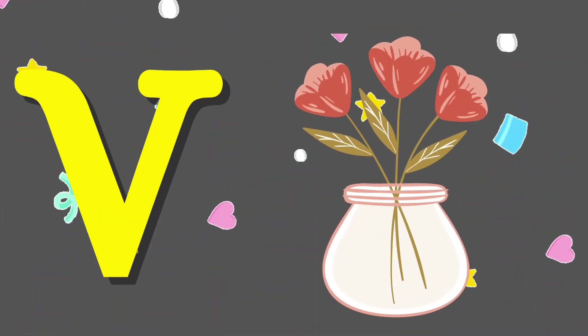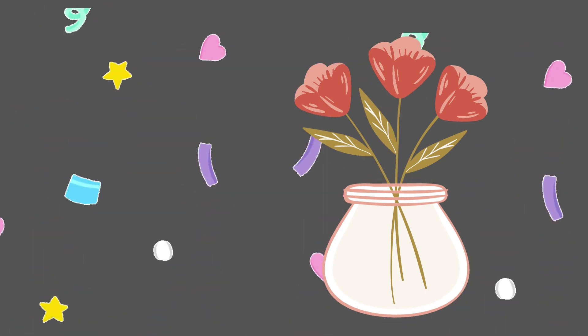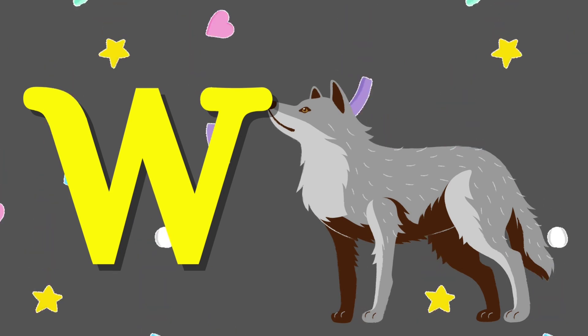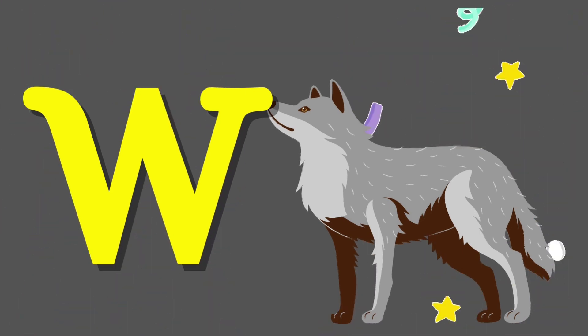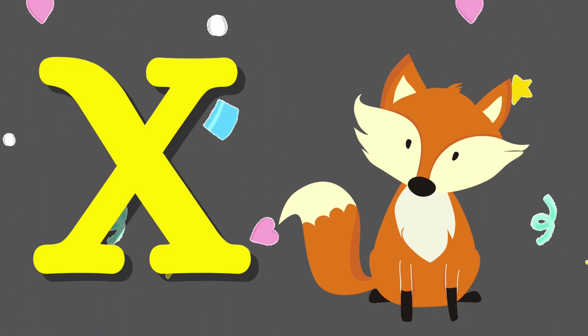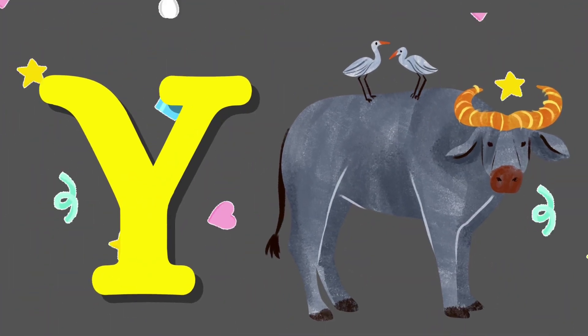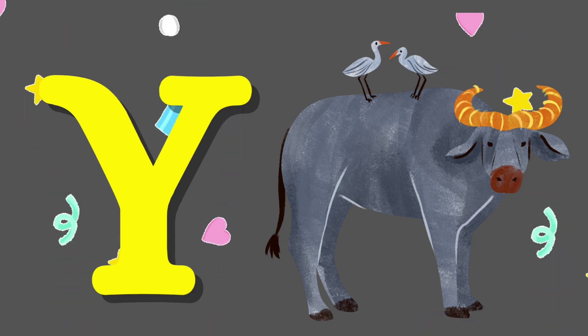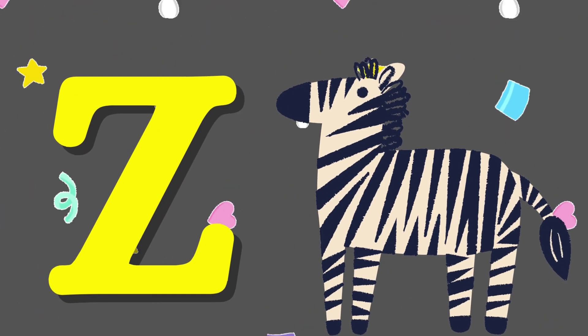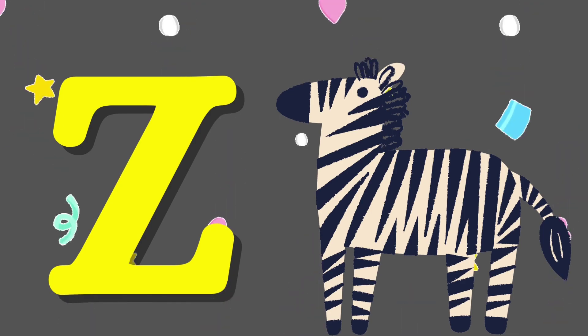V is for Vulture. W is for Wolf. X is for X-ray fish. Y is for Yak. Z is for Zebra.